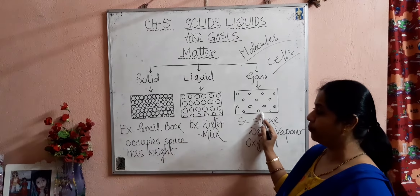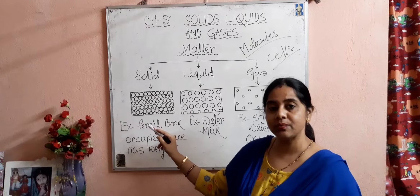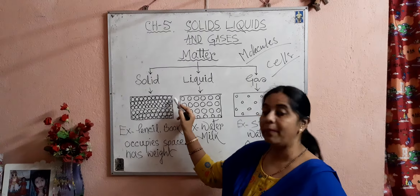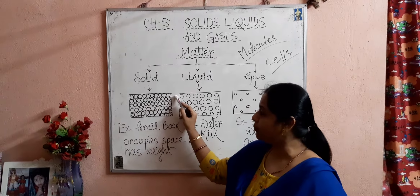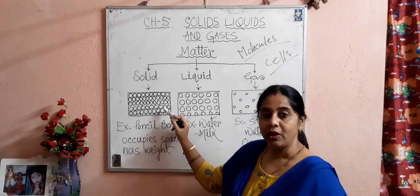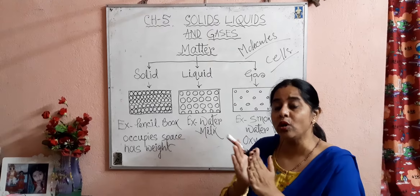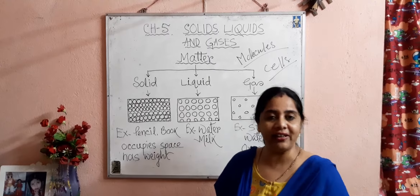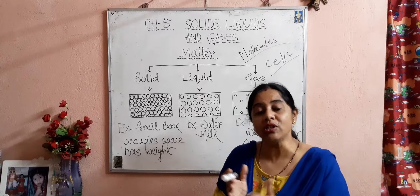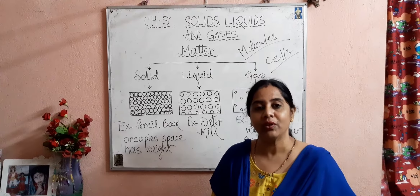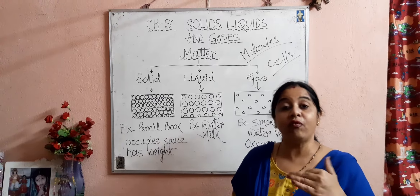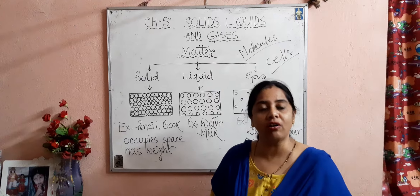Now you see the diagrams. I have drawn some diagrams which represent the arrangement of molecules in matter. In a solid matter, the molecules are arranged very closely together — they are very closely packed with each other. They are like good friends who prefer to sit closely with each other. So the force of attraction between them is very strong.